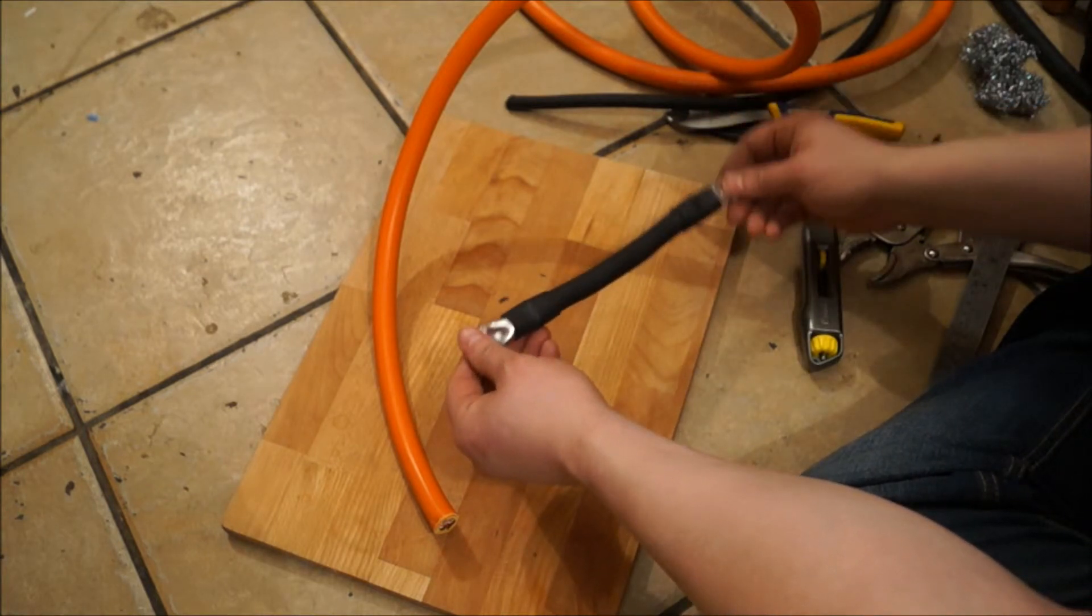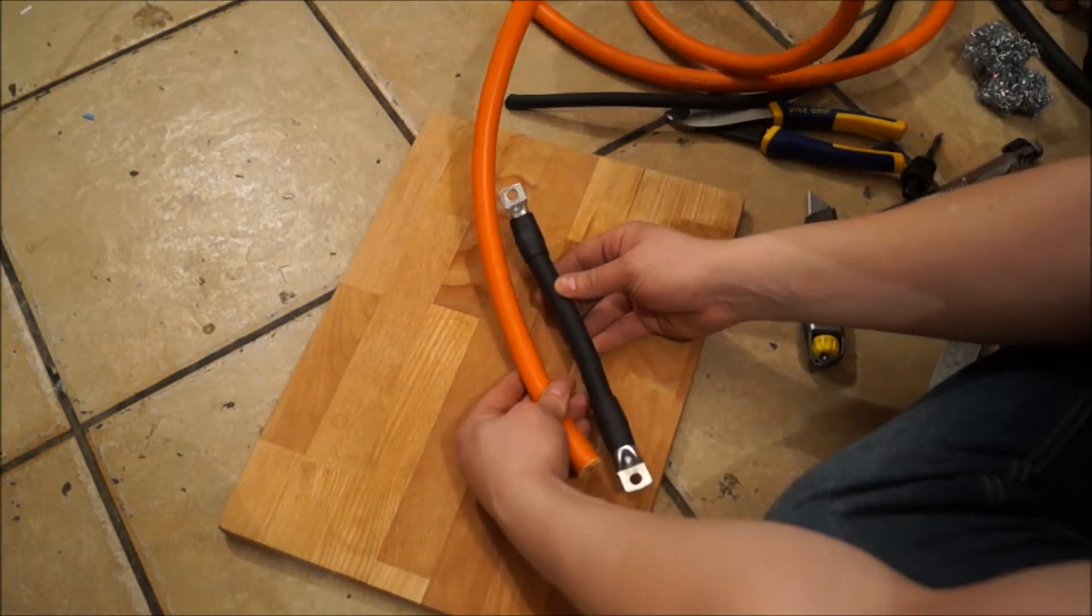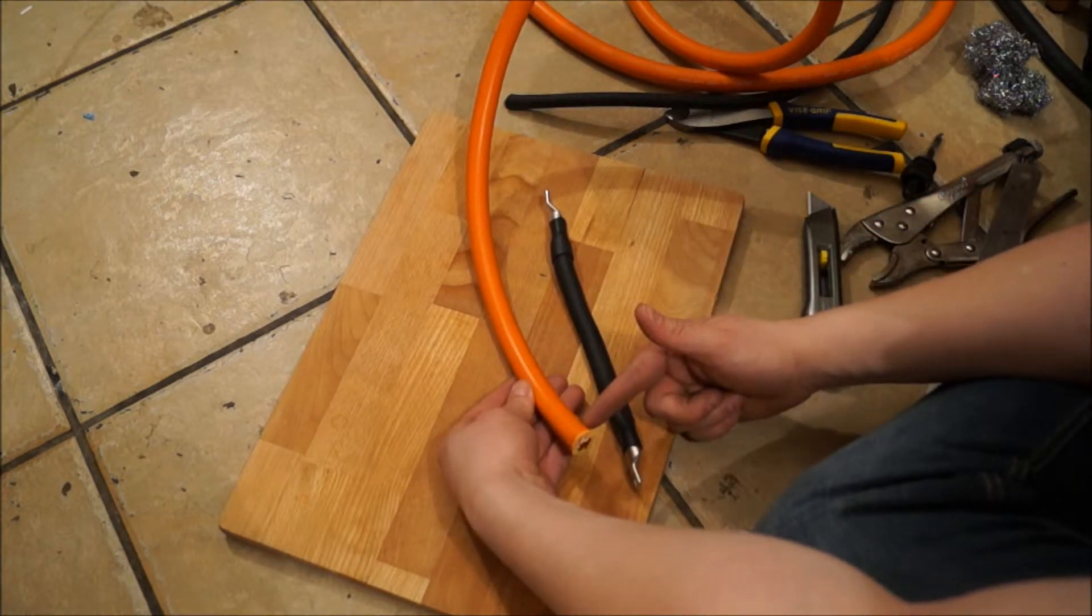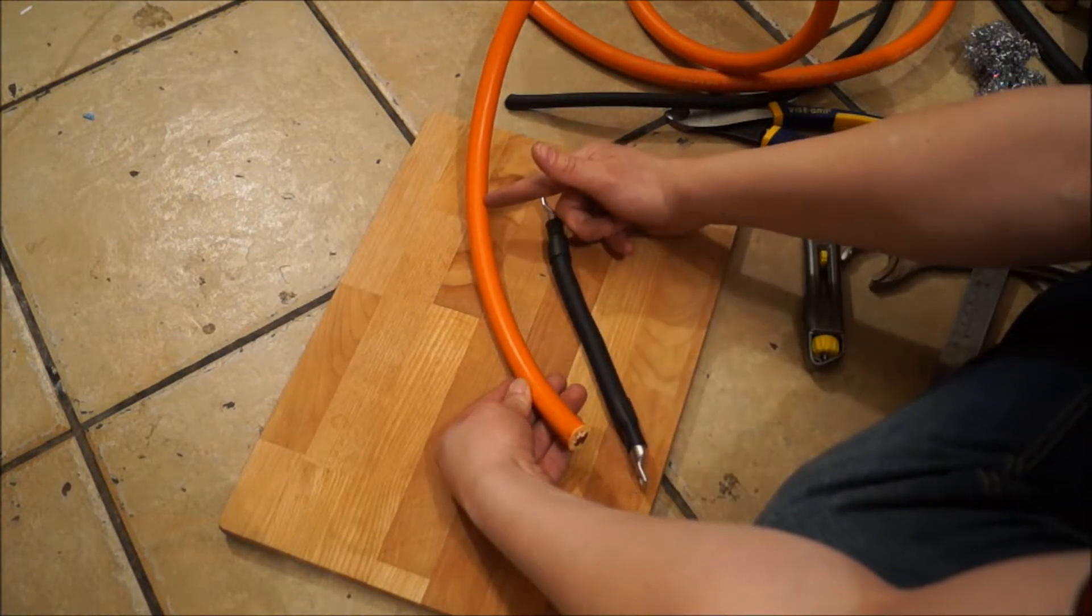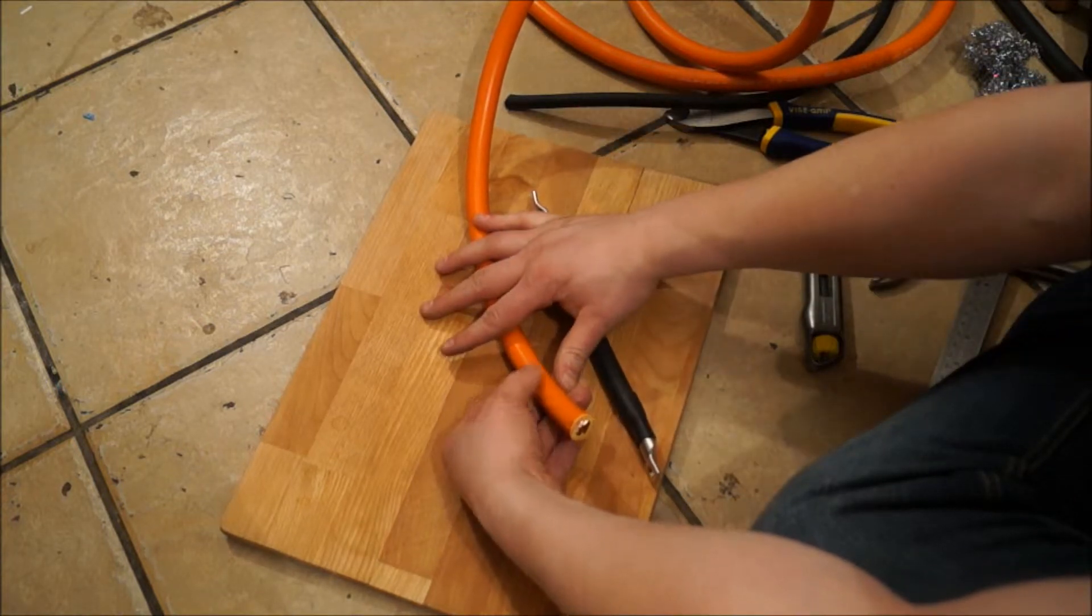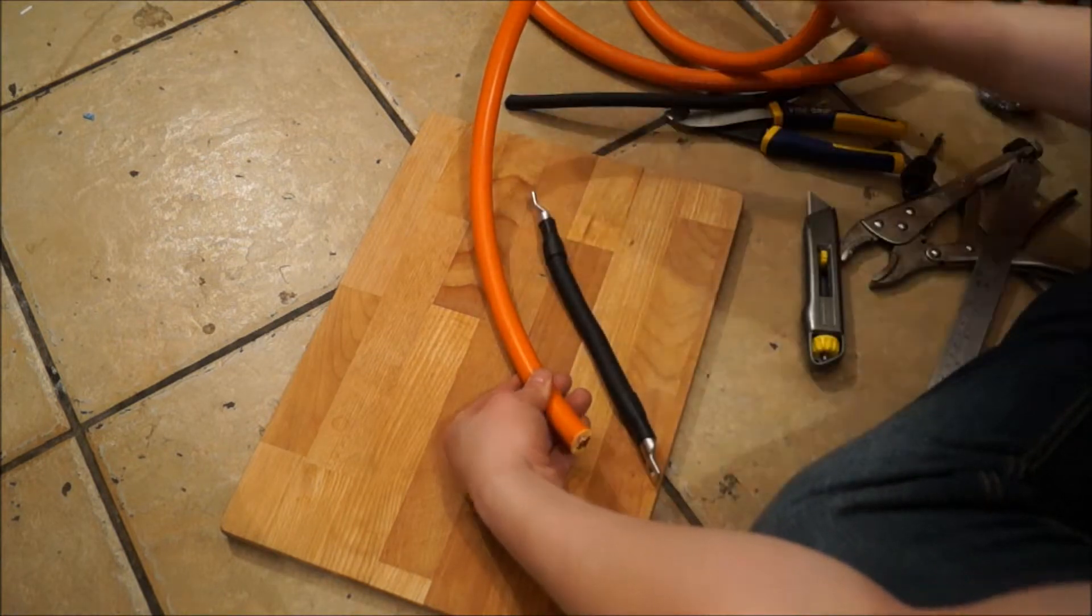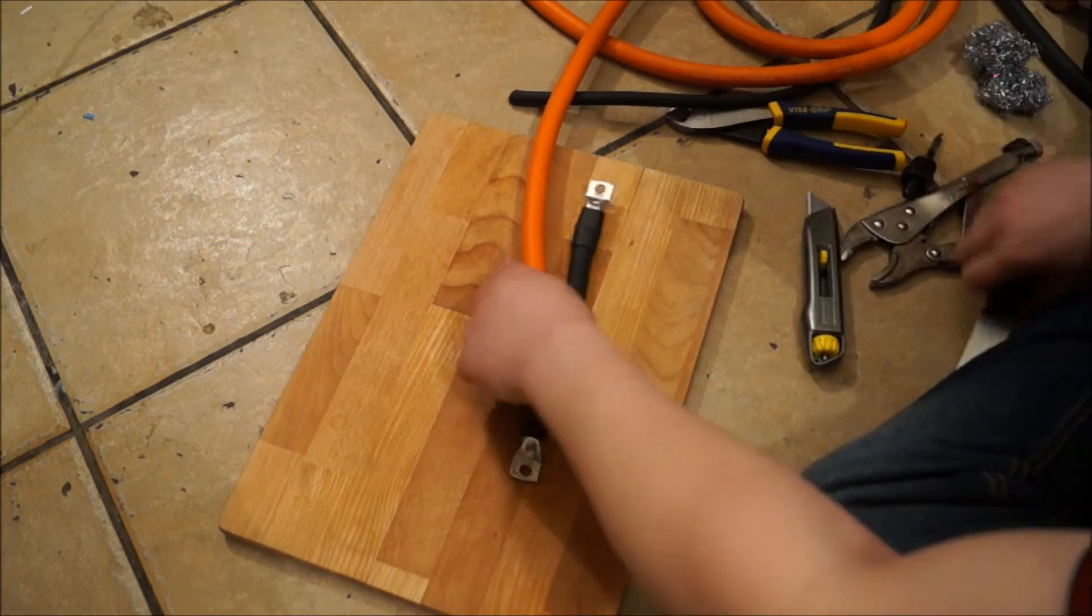So basically to do these, I find it easiest is to strip one end, put a terminal on, then cut, and then do the terminal there, rather than having one small piece of cable and trying to fiddle about putting the terminal on both ends.